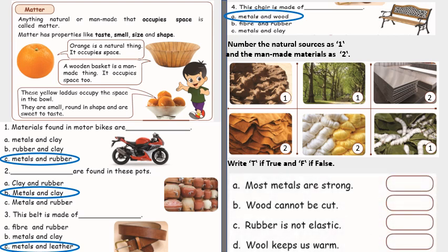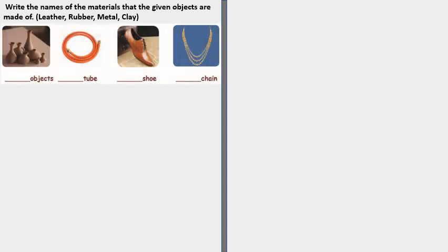Now write true if true and false if false. Most metals are strong. True. Wood cannot be cut. False. Rubber is not elastic. False. Wool keeps us warm. True.